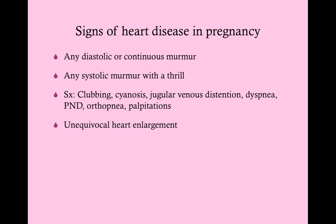Signs of heart disease in pregnancy include any diastolic or continuous murmur, any systolic murmur with a thrill — particularly pan-systolic murmurs with a thrill — meaning loud murmurs. Symptoms such as clubbing, cyanosis, jugular venous distension, dyspnea, PND, orthopnea, and palpitations are concerning. Unequivocal heart enlargement on echo is an ominous sign. Bilateral enlargement is a harbinger of peripartum cardiomyopathy.